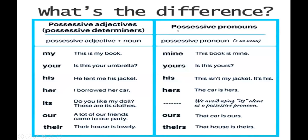That's the summary: subject pronouns, possessive adjectives, and possessive pronouns. A possessive adjective goes before a noun — 'this is my book, is this your umbrella, he lent me his jacket, I borrowed her car, do you like my doll, these are its clothes, a lot of our friends came to our party, their house is lovely.' For possessive pronouns: 'this book is mine, is this yours, this isn't my jacket it's his, the car is hers, the car is ours, that house is theirs.'